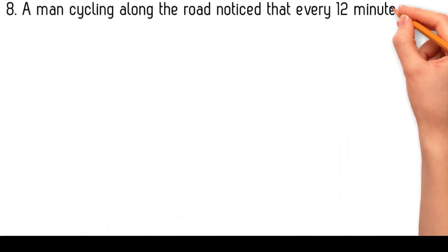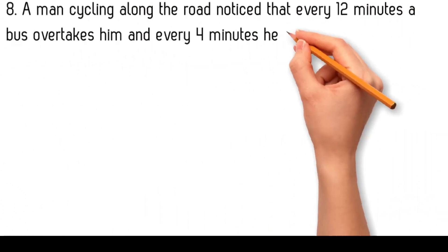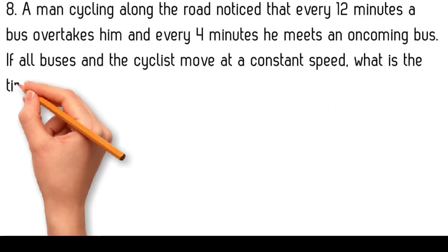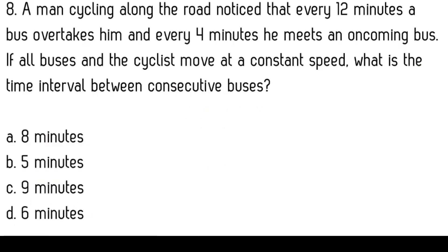A man cycling along the road noticed that every 12 minutes a bus overtakes him and every 4 minutes he meets an oncoming bus. If all buses and the cyclist move at a constant speed, what is the time interval between consecutive buses? 8 minutes, 5 minutes, 9 minutes, 6 minutes.